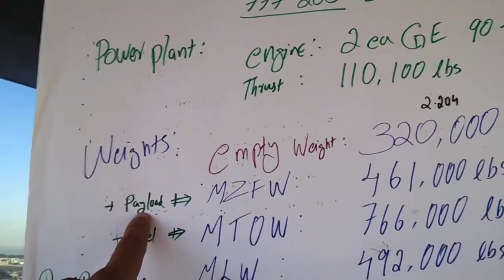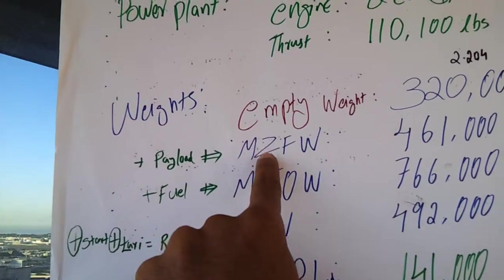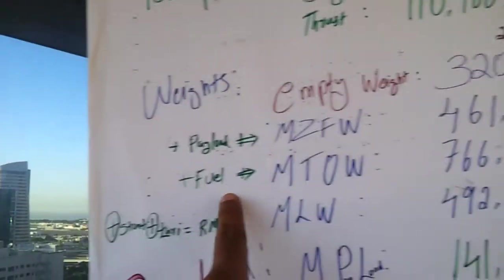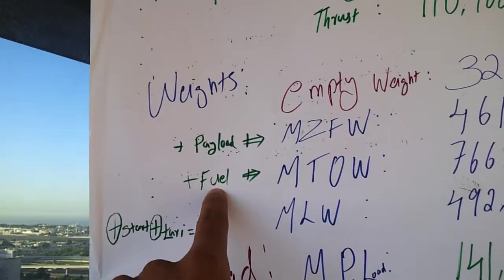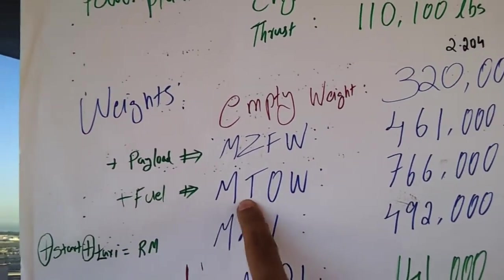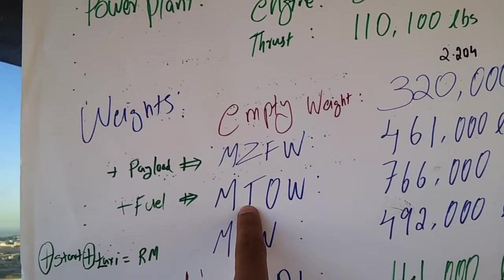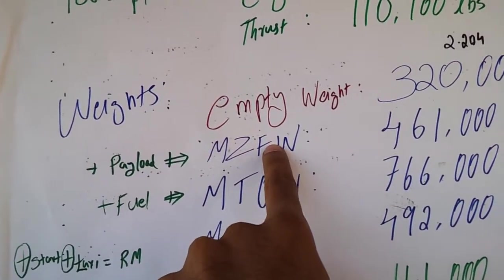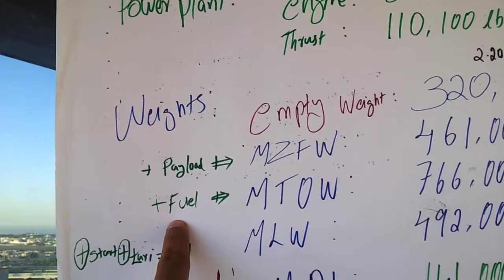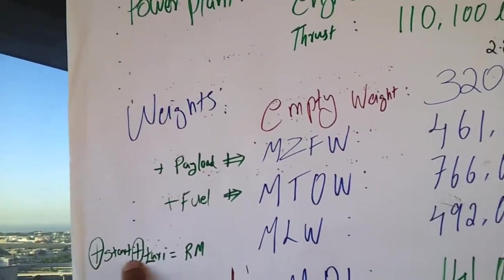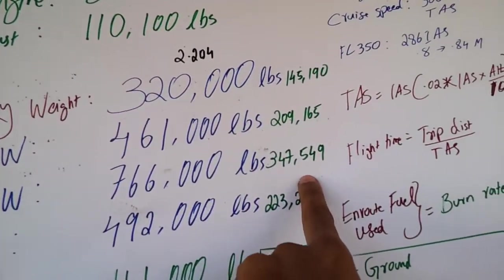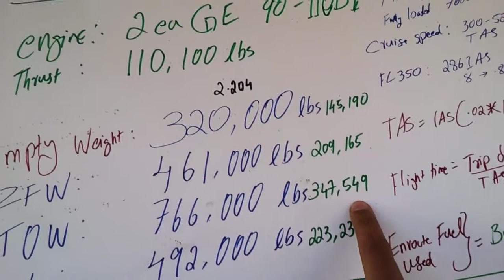The maximum zero fuel weight, which is empty weight plus payload, is 209,165 when it adds to the fuel, which does not contain the start and taxi. MZFW adding to the fuel of the entire trip, excluding this portion start and taxi, gives maximum takeoff weight which is around 347,549 kg.